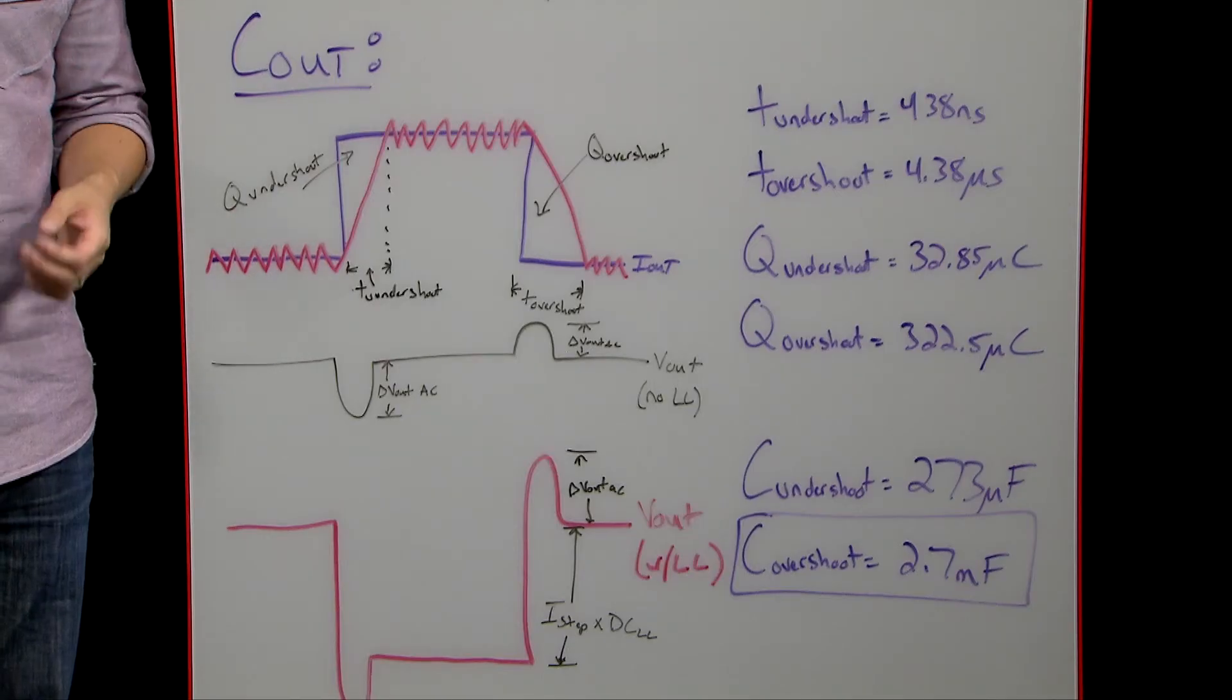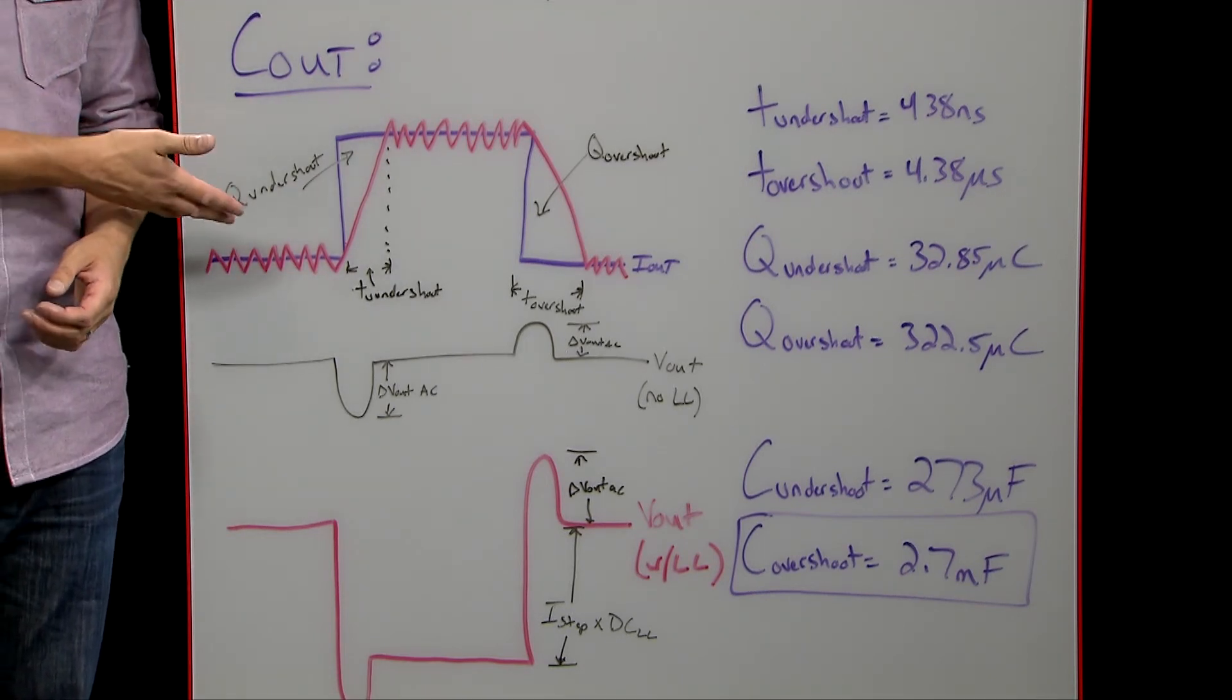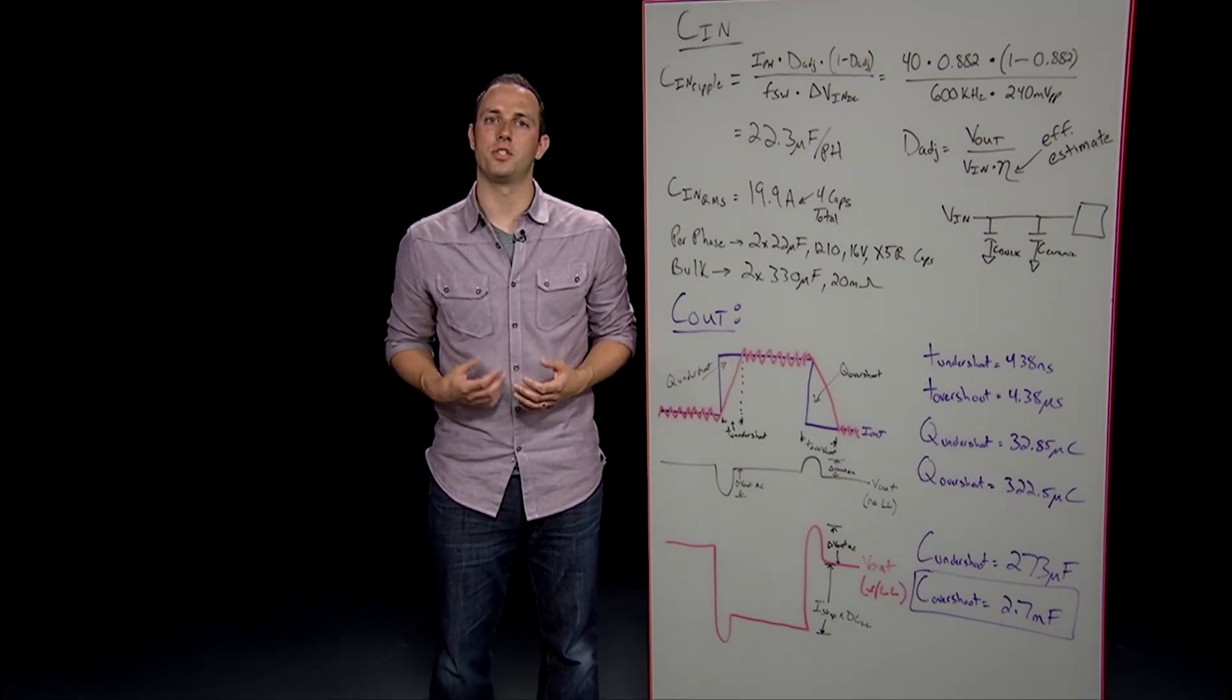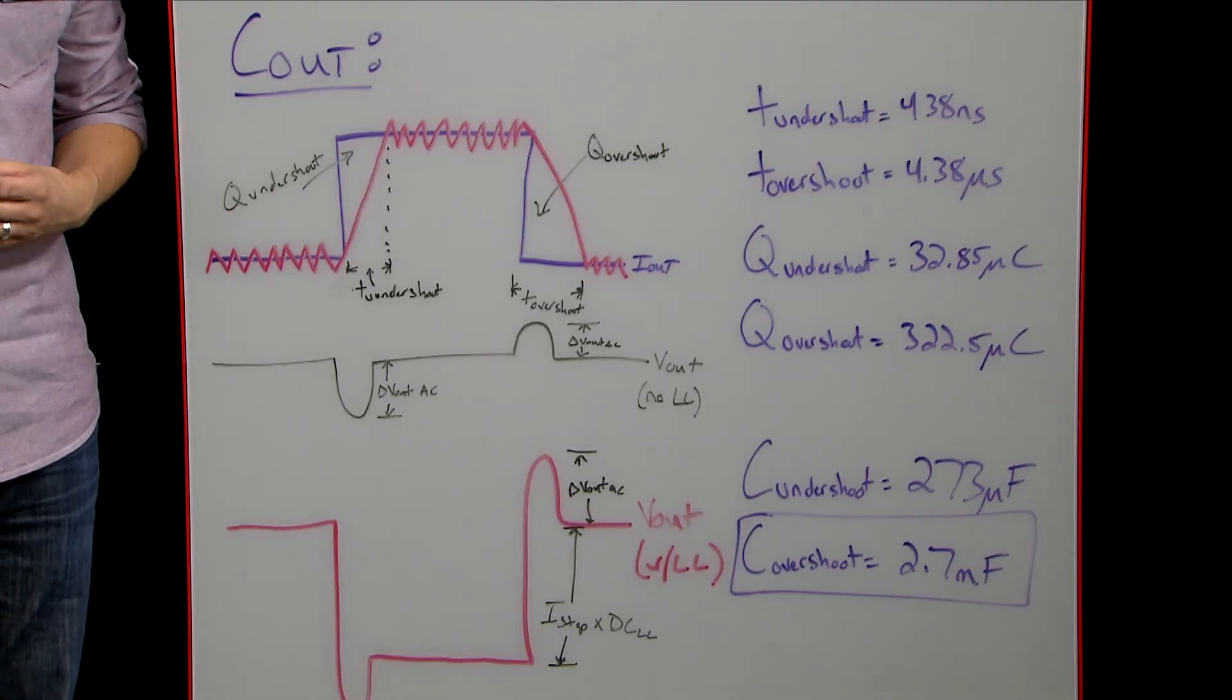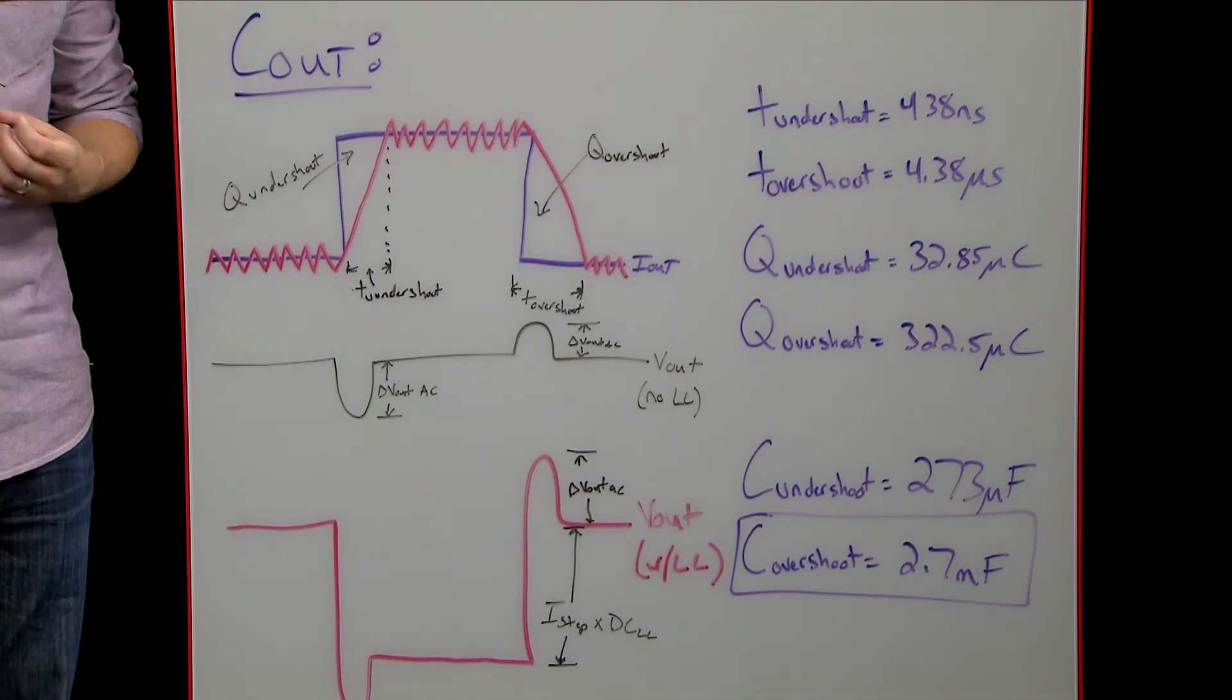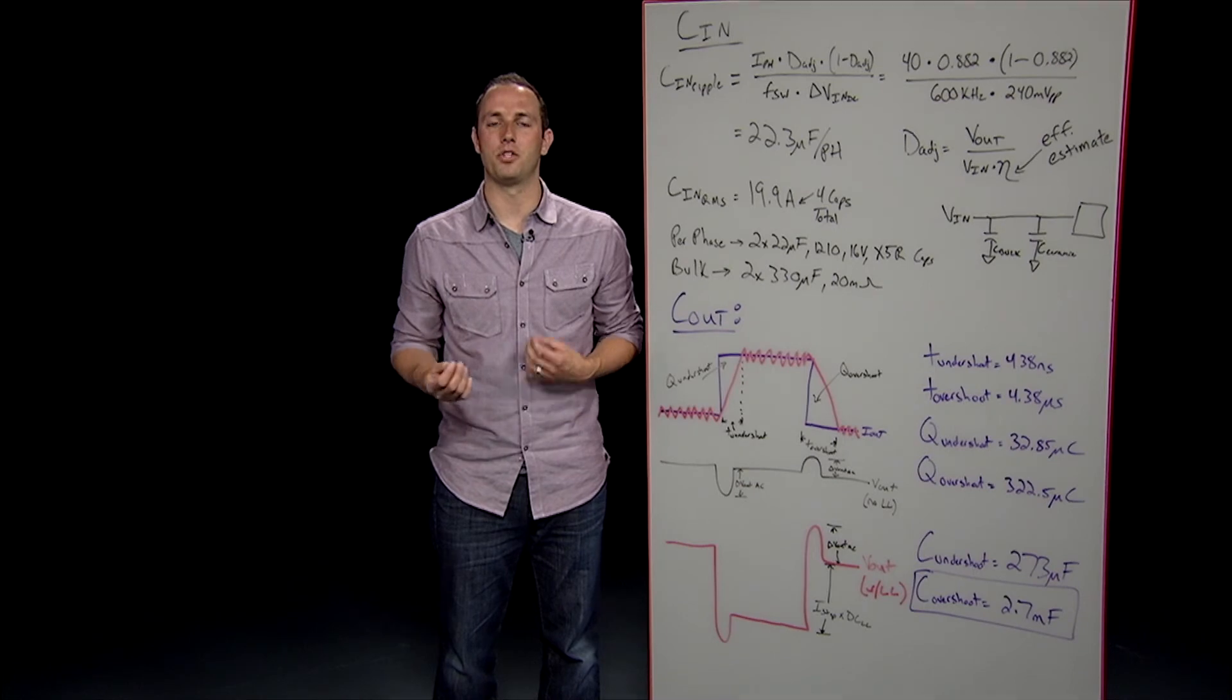During a load step, it takes the inductor current, equivalent inductor current in our case, some amount of time to slew to the higher current value. The space between the curves, Q-undershoot, is the charge difference that has to be provided by the output caps to the load, which causes Vout to undershoot. On the load release side, excess charge stored in the inductors has to be transferred to the output caps because the load no longer needs as much current. This excess charge to the caps causes Vout to overshoot.